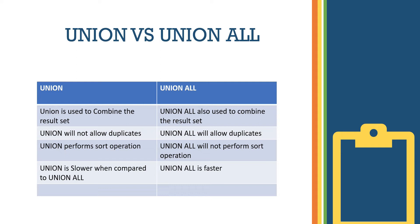Both Union and Union All are used to combine result sets. But the key difference is: Union will not allow duplicates, whereas Union All will allow duplicates.